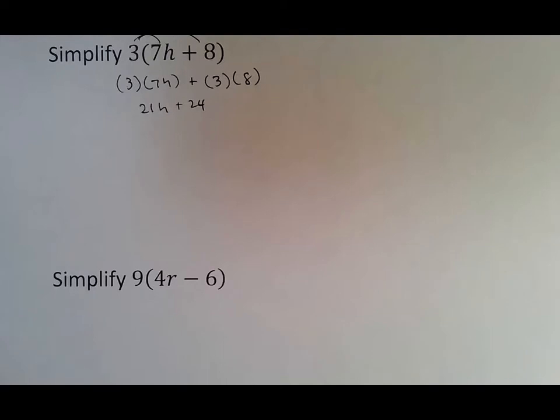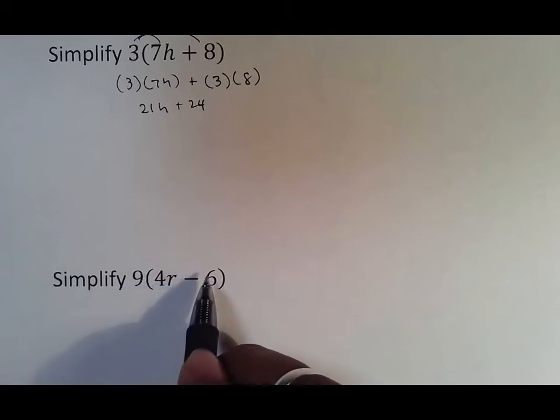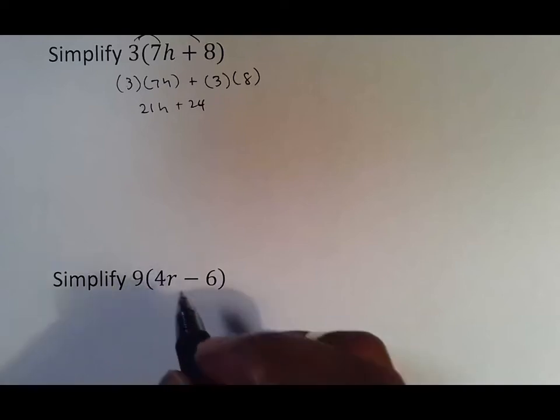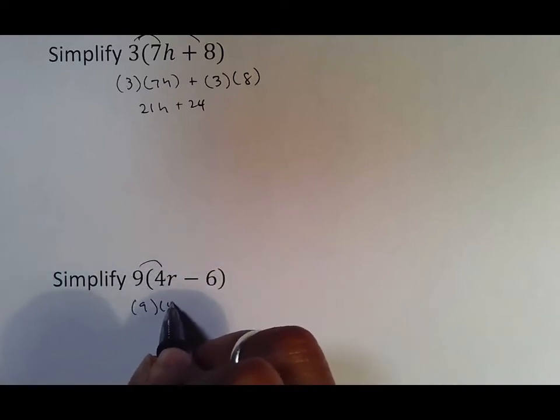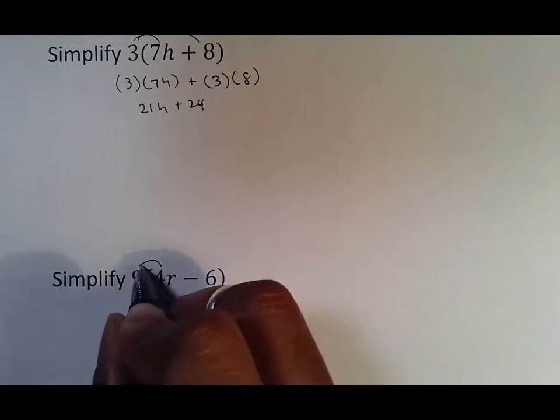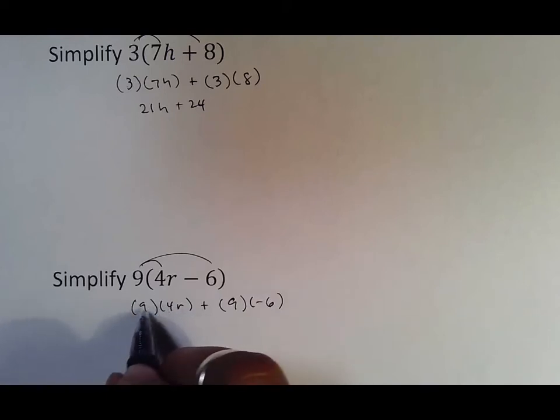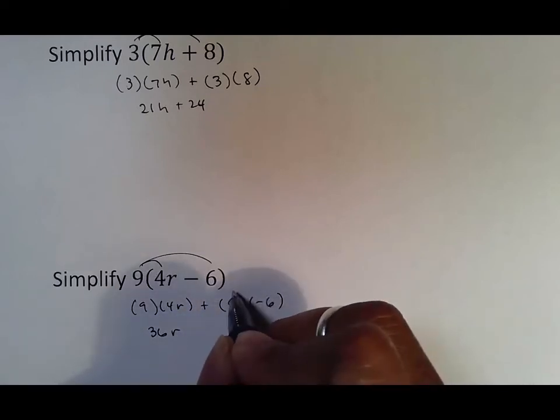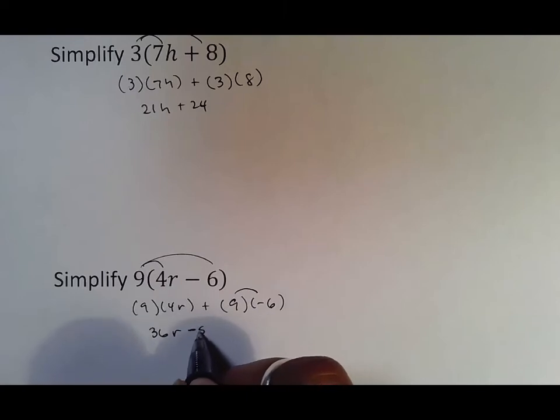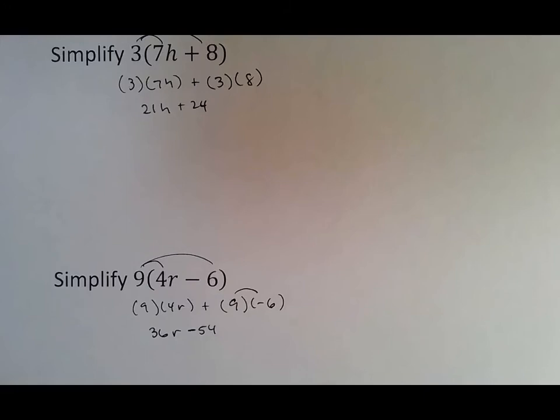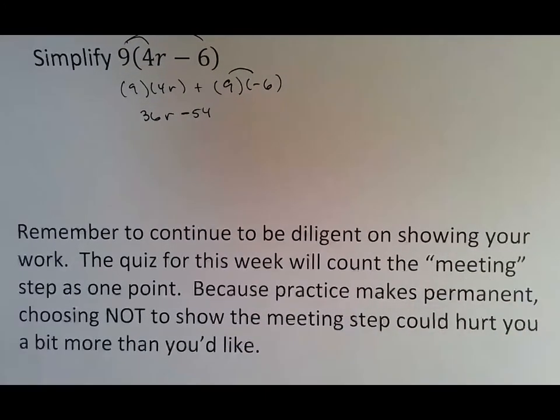Moving on: 4r is a term, negative 6 is a term, and the other term is 9. Nine meets 4r, and always using a plus, nine meets negative 6. When you multiply 9 by 4r, 9 times 4 is 36, and we bring down the r. Nine times negative 6—there's a negative times a positive—which is negative 54. All these negative rules we're starting to get to, that's really the toughest part of adjusting to algebra. We're moving at a pace where it shouldn't be too bad, but if it does get tough, make sure you talk to us.